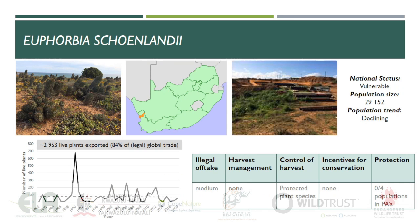Euphorbia shunlandii is found in the southernmost portion of the Namaqualand Strandveld in the Western Cape Province. It is threatened by ongoing habitat loss and degradation due to mining and agricultural activities. The species is currently assigned a status of vulnerable and the population is estimated to number just over 29,000 individuals. Several of the populations are thought to be in a state of continued decline. Export of the species over the years has been relatively stable, with around 2,953 plants having been exported between 1980 and 2018, accounting for 84 percent of all global trade, making South Africa the primary exporter.